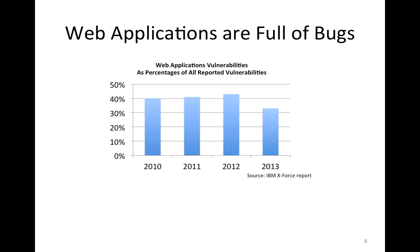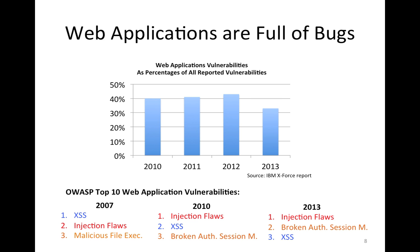Why are we considering web applications? Because web applications are full of bugs. A figure from the IBM X-Force report shows that for the past four years, more than 30% of reported vulnerabilities worldwide come from web applications. According to the Open Web Application Security Project, the two vulnerabilities — cross-site scripting and SQL injection — caused by string-related errors in input validation and sanitization code in web applications are among the top three vulnerabilities reported in 2007, 2010, and 2014.